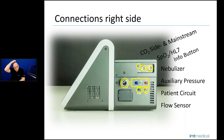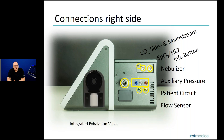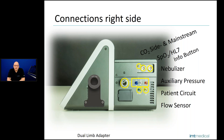All the other inlets or connectors are for the flow sensor, pressure line, and patient circuit. There is a rubber lid below the patient circuit connector which has the oxygen cell behind it, so you can exchange the oxygen cell there. Last but not least, you have the possibility to attach either a sample integration valve or an integrated exhalation valve. If you want single use, you could also use a limb adapter, so it's possible to use whichever suits you best.